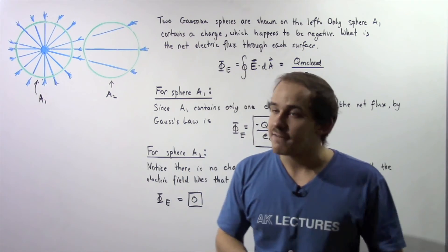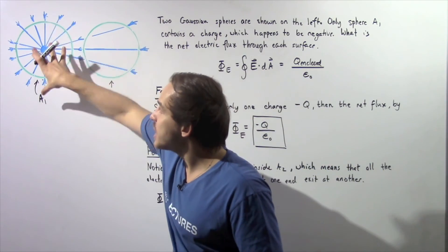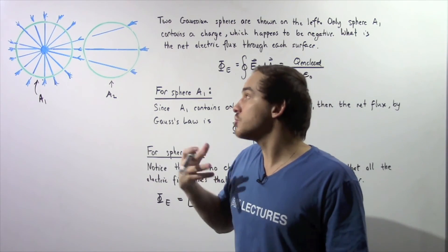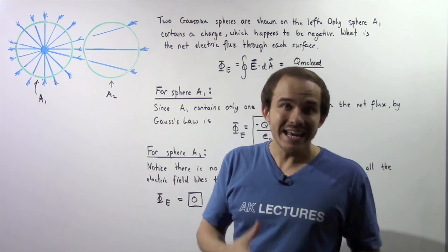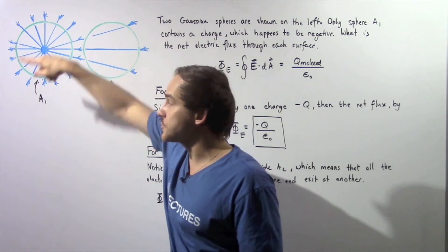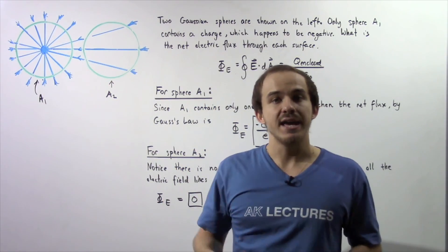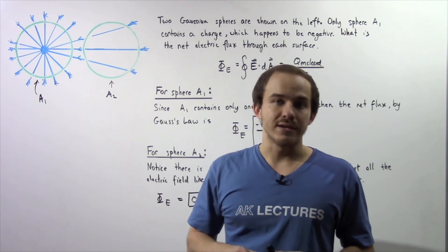On the other hand, if we do have an electric charge within our chosen region and the net or the total charge is negative, we're going to have a negative flux. On the other hand, if it's positive, we're going to have a positive net electric flux.